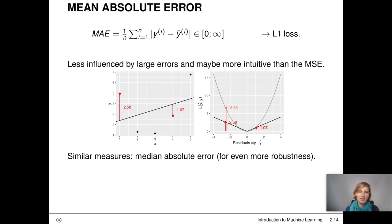A similar measure that is even more robust, even less dependent on outliers, is the median absolute error.